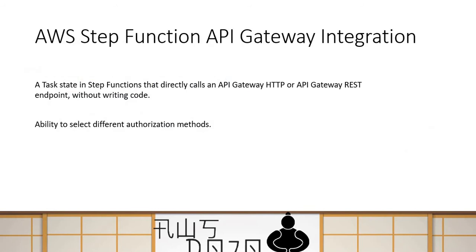This was a new feature actually launched by AWS a couple of weeks back. It provides a task state in Step Function, and using the task state, you can configure your REST or HTTP API in API Gateway to call them without writing even a single line of code. It also allows you to configure different types of authorization between your Step Function and API Gateway.